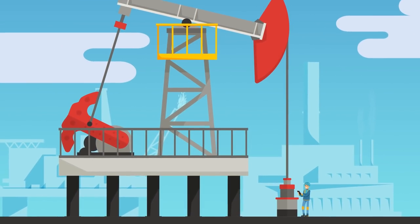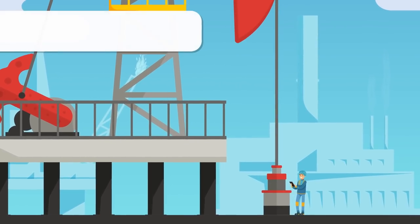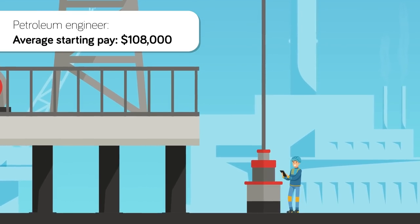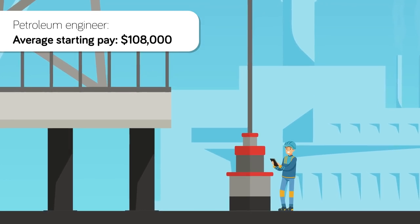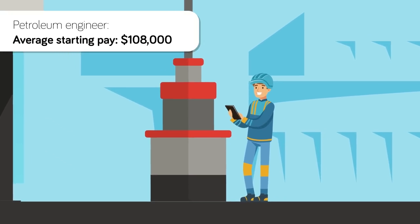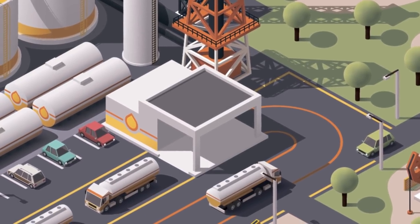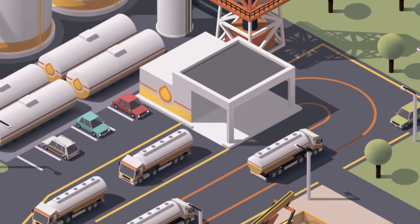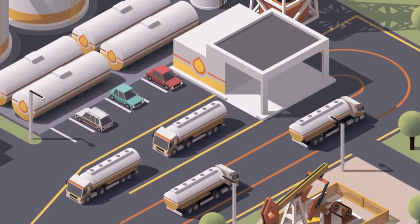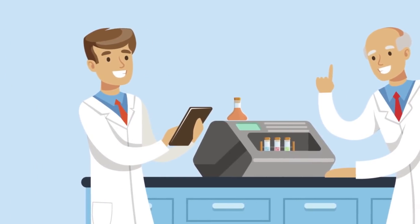First up, and potentially the most lucrative of our 5 degrees, is petroleum engineering. With an average starting pay of $108,000, this industry is a sure way to start earning big fast. Petroleum engineering relates to the production of hydrocarbons, namely crude oil or natural gas. Once oil and gas exploration has taken place, it needs to be extracted from the source and refined into a usable energy source. That's where petroleum engineers come in.